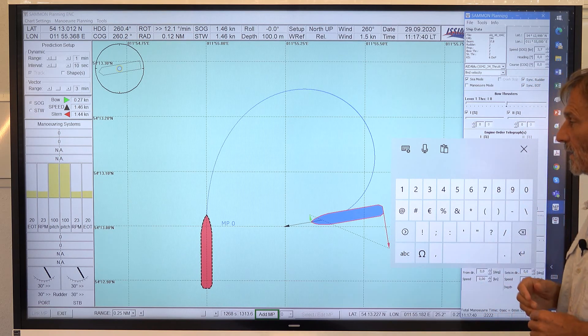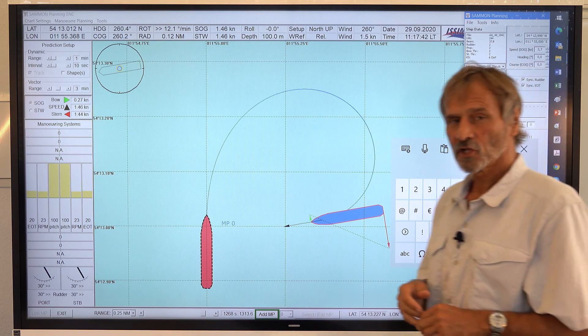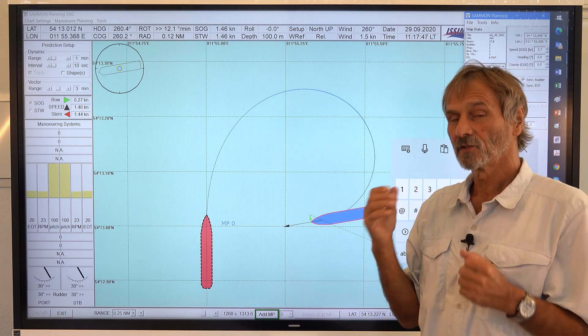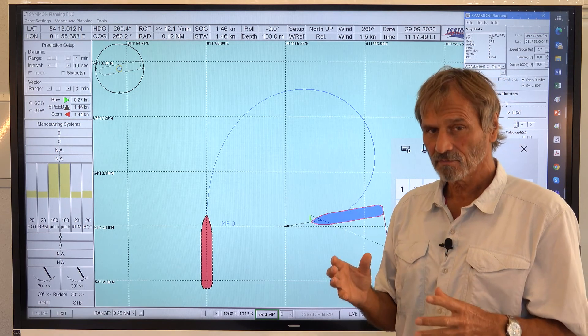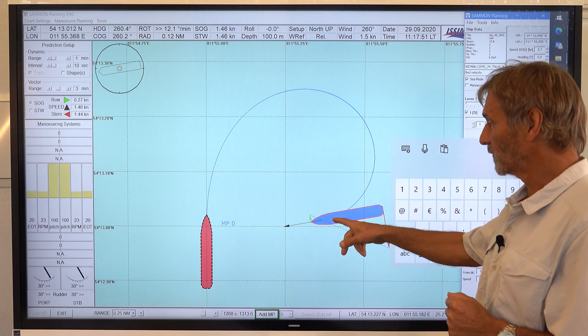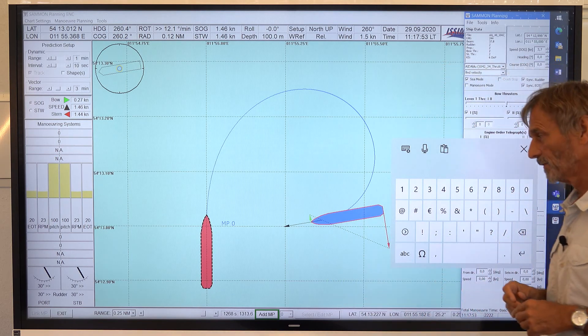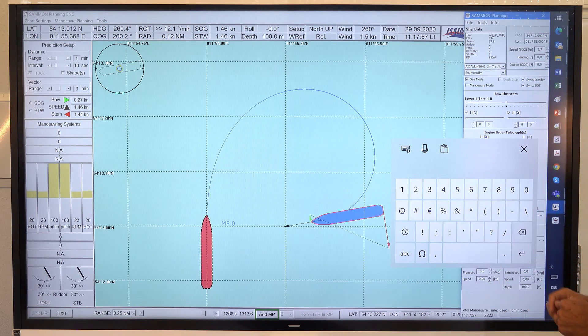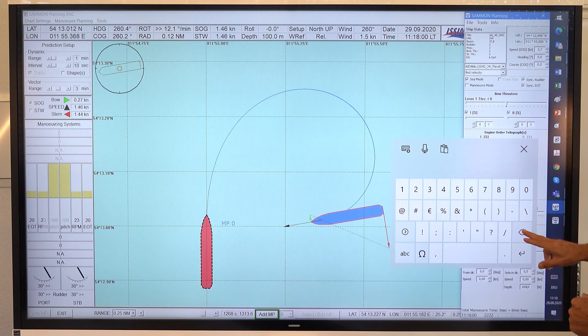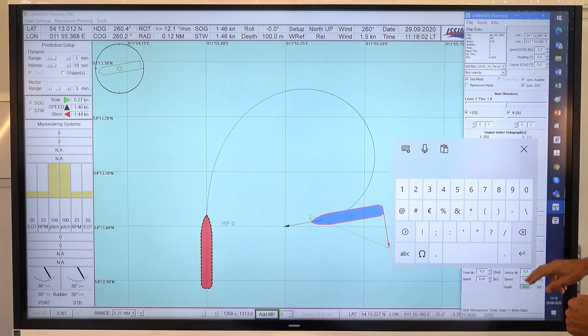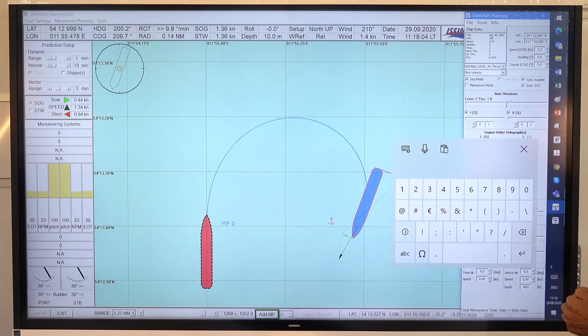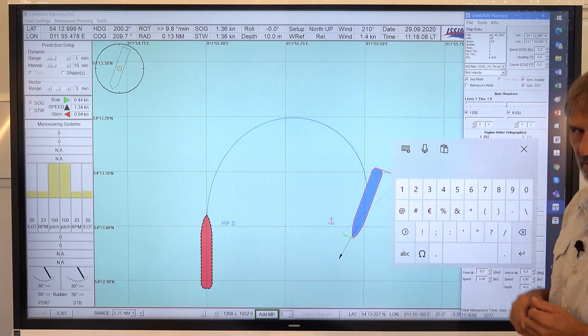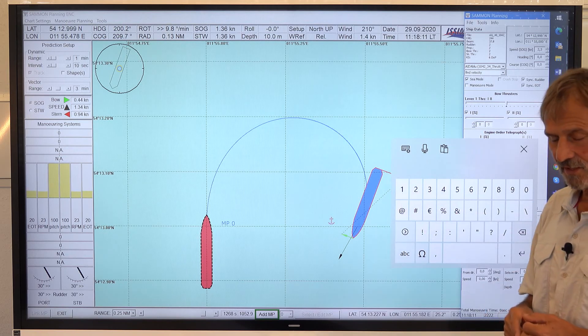So this explains the effect of shallow water on the pivot point. Again, the turning circle, it's getting bigger. The drift angle is getting smaller. And therefore, the pivot point is a little bit more to the ship center. Let's do it again. So we are here. We go now to 10 meters of water. And then we see, okay, this is a little bigger turning circle. And the pivot point is to the center.